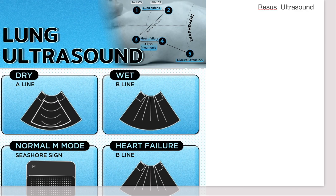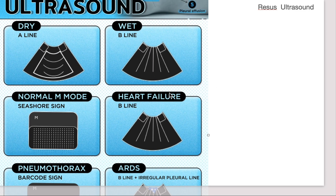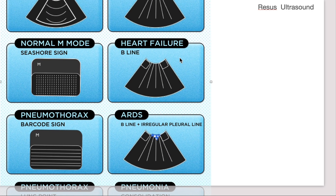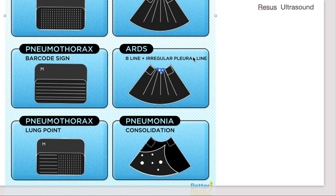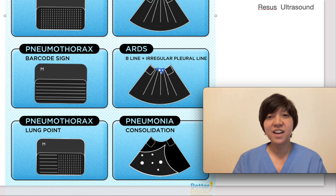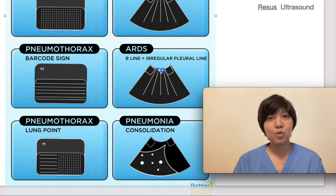To summarize: differentiate between A-lines and B-lines first. If there are B-lines, see if it's one side or two sides. If it's two sides, differentiate between heart failure — which has a smooth pleural line — versus ARDS, which has irregular or thickened pleural line bilaterally. If there is one side with irregular pleural line or shred sign consolidation, it is probably pneumonia.